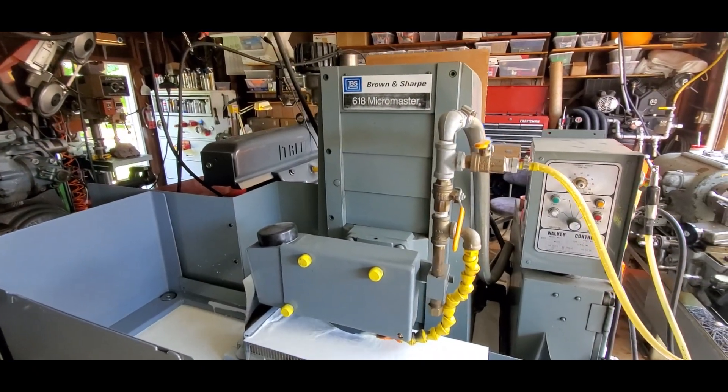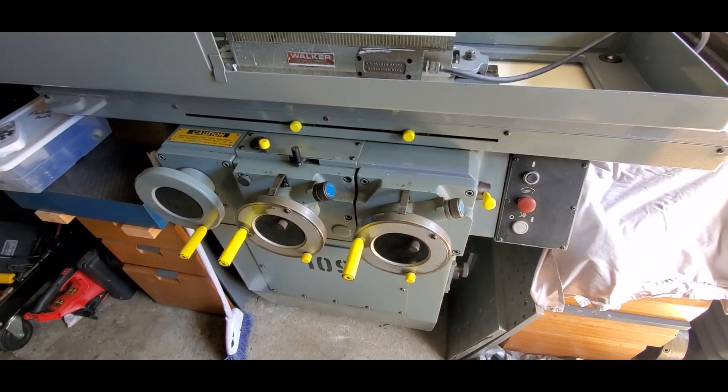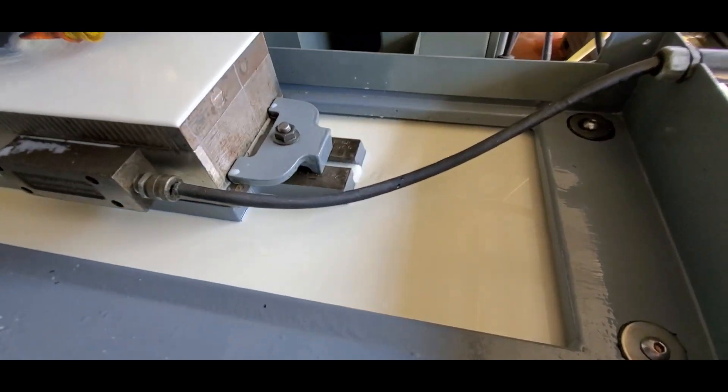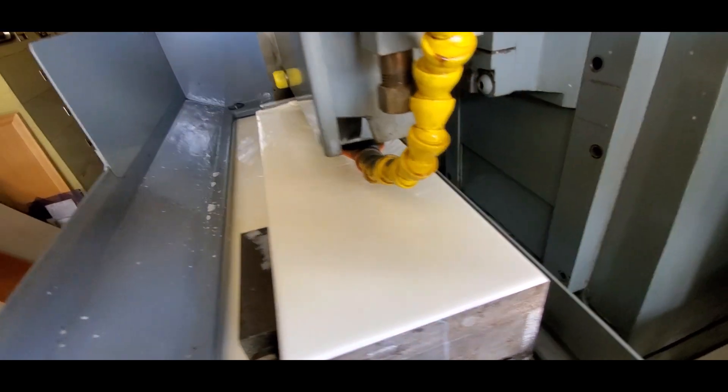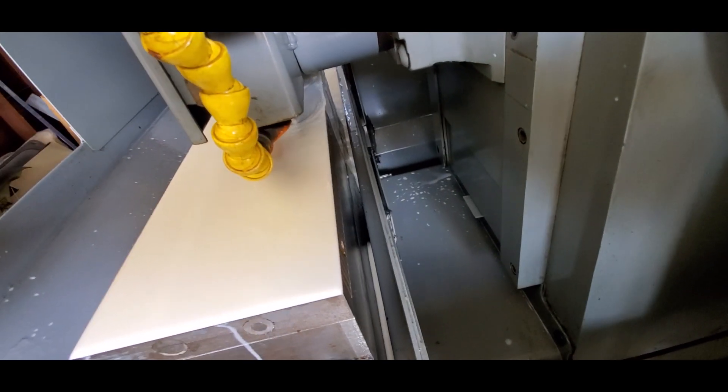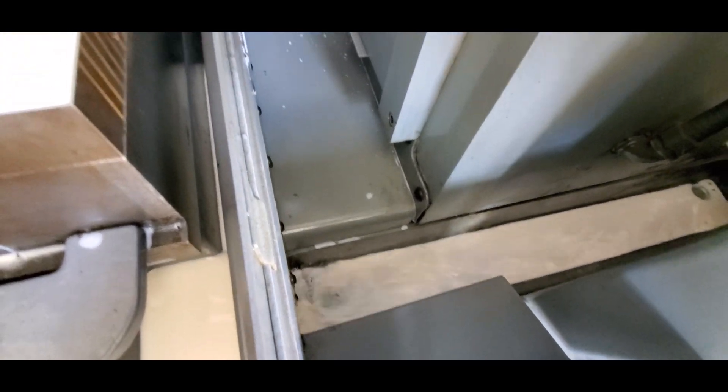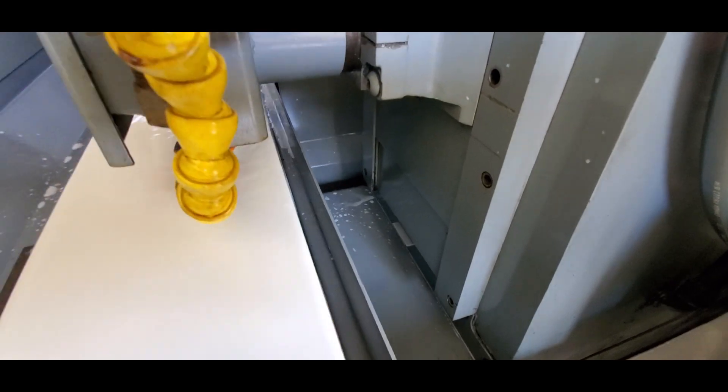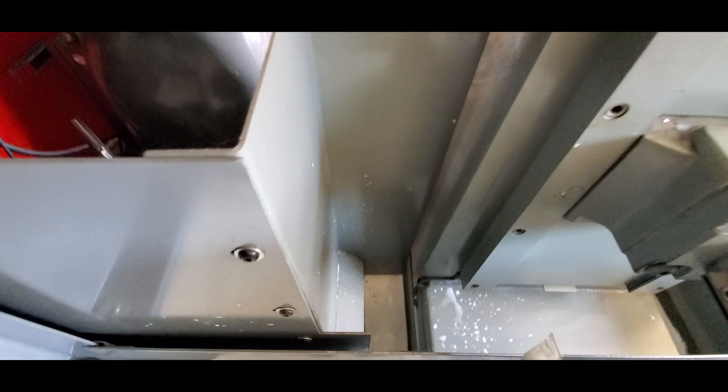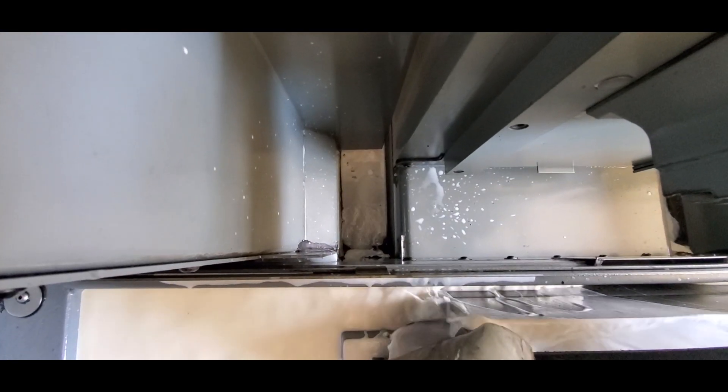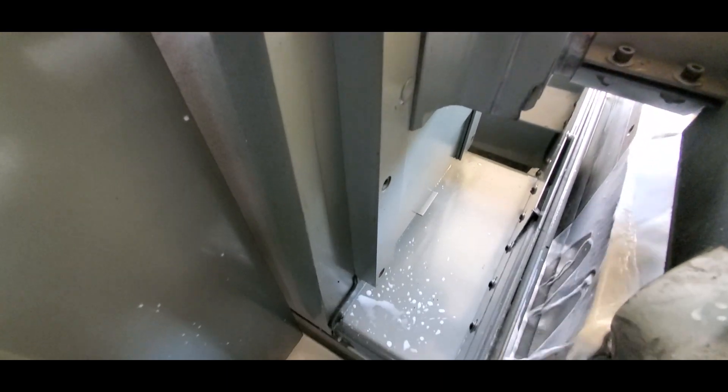On this surface grinder, which is the Brown and Sharp 618 MicroMaster hydraulic, the coolant collects in the table, goes in behind the chuck, and then exits in two troughs. One there and one on the other side, right there. Any coolant that splashes on the column goes into those troughs.